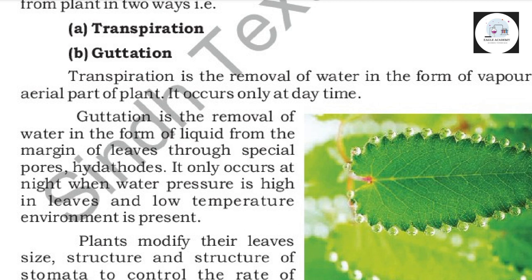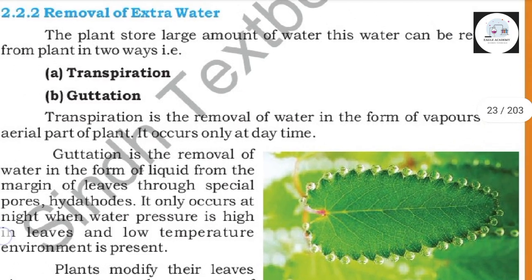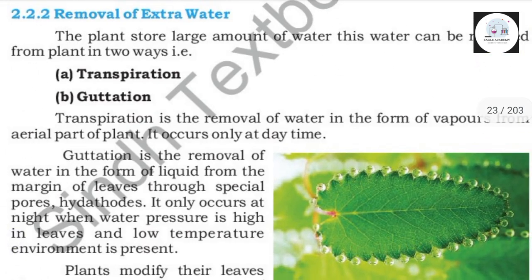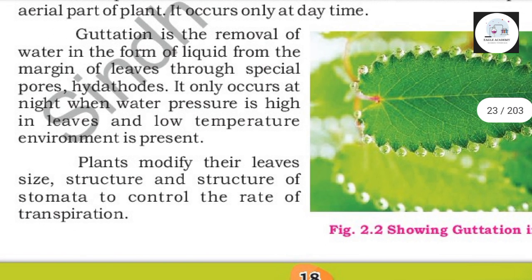Guttation occurs in a low-temperature environment. Plants modify their leaves — leaf size, structure, and structure of stomata — to control the rate of transpiration.